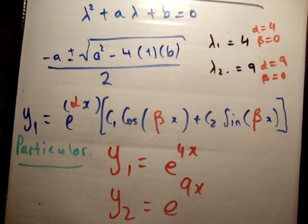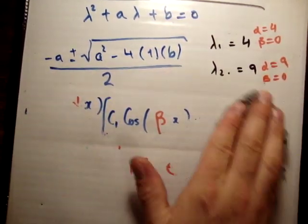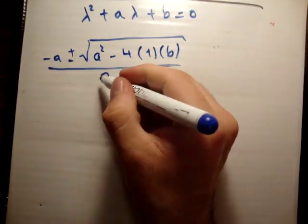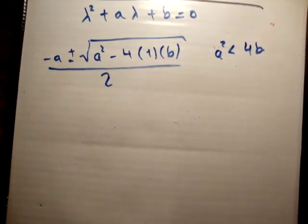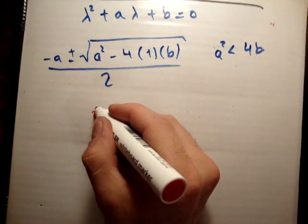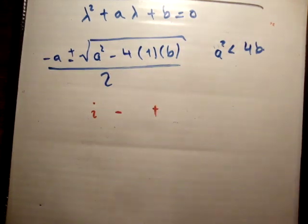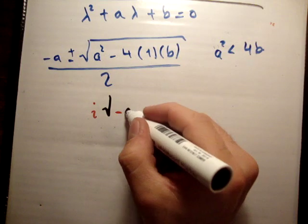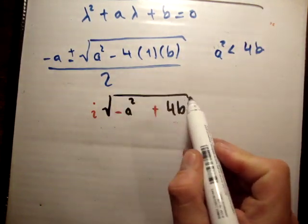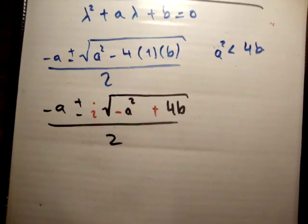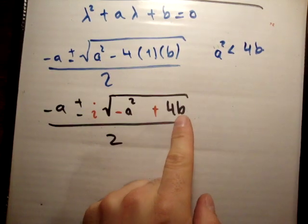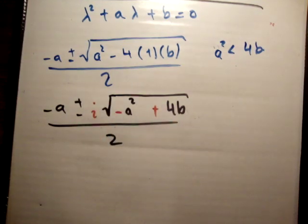But what if you have an imaginary component? If a squared is less than 4b, you get an imaginary solution. In that case, factor out i (iota) and rewrite: take the square root of negative(a squared minus 4b) = i times the square root of (4b minus a squared). This is now a positive number times i, the square root of negative 1, and still gives us lambda 1 and lambda 2.